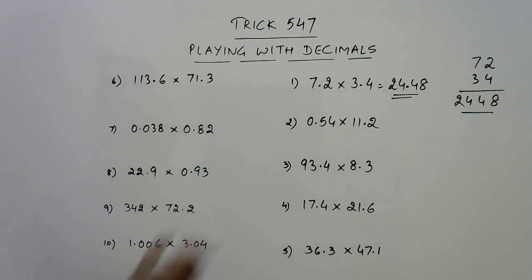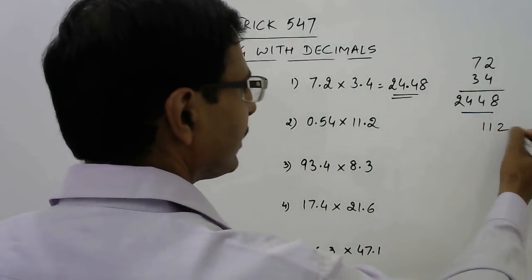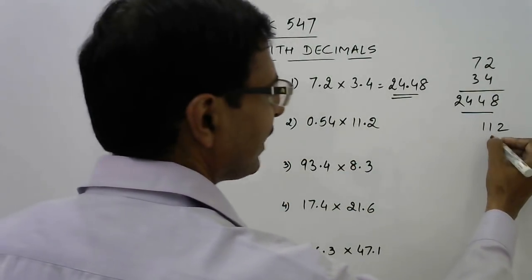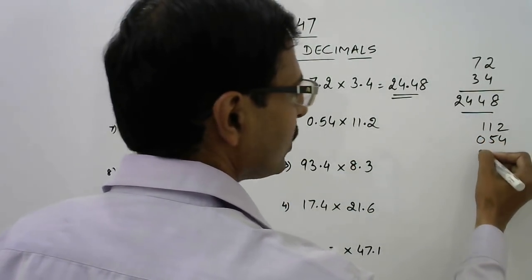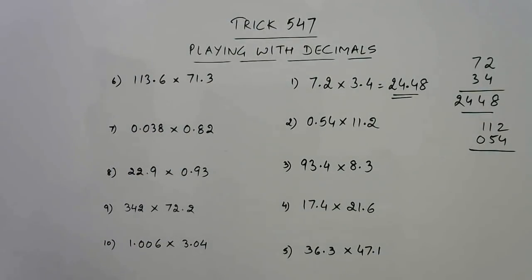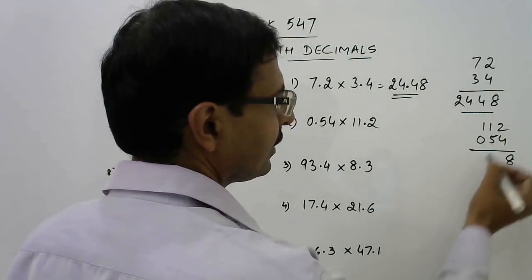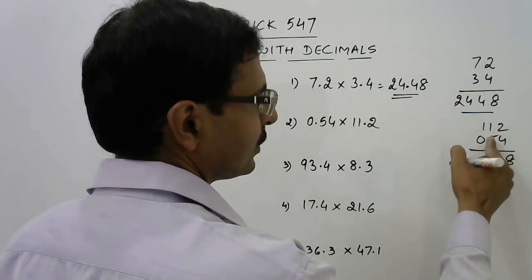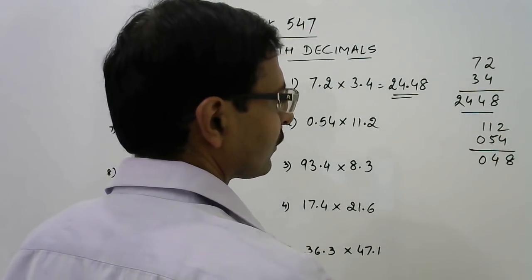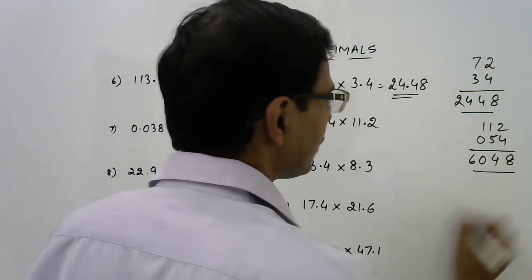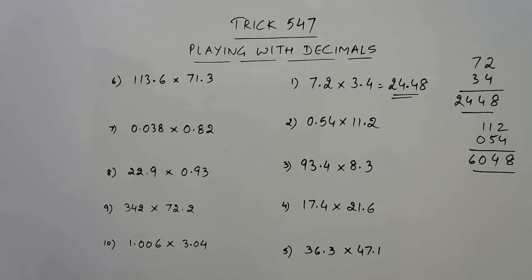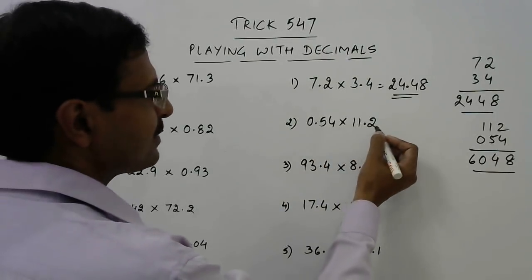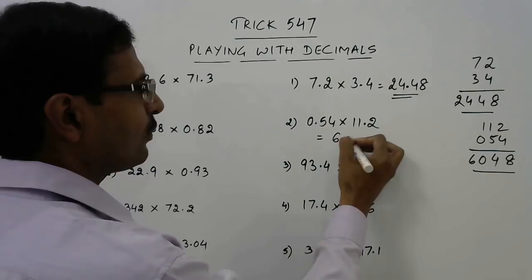Now see this number is actually 0.54 and 11.2. So I will write only 112, this is the three digit number, and this is only the two digit number 54, and I will put a zero here. Then I will start solving this using the method of vertically and crosswise. The product is 6048, so we will put the decimal 1, 2, 3, that means 6.048 is the answer.